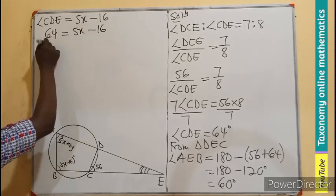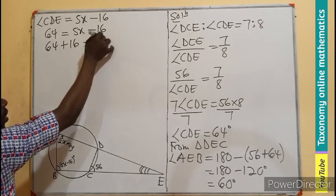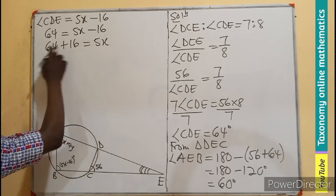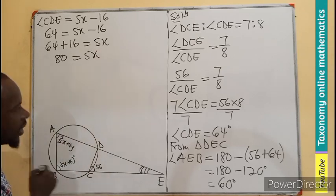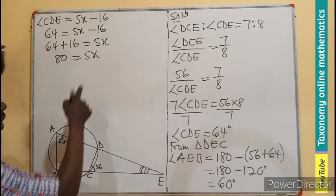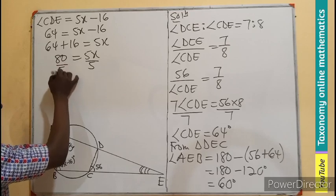We can add 16 to both sides. So 64 plus 16 equals to 5x. I believe 70 we have 80 equals to 5x.